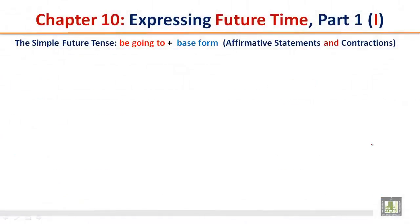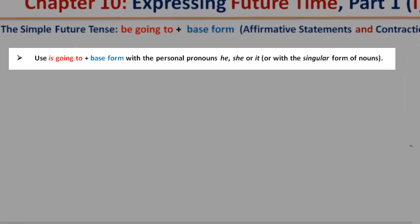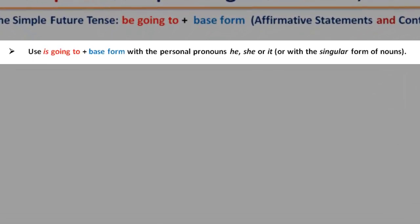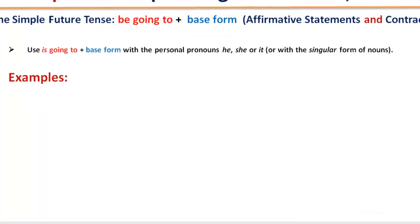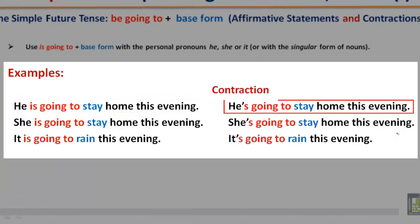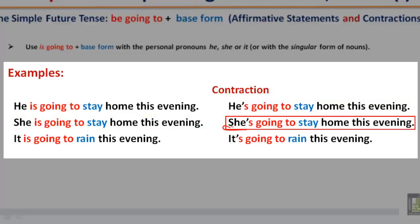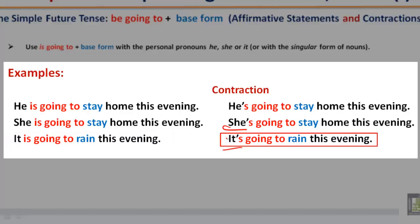The simple future tense: be going to plus the base form — affirmative statements and contractions. Use is going to plus the base form with the personal pronouns he, she, or it, or with the singular form of nouns. Examples: He is going to stay home this evening. Contraction: He's going to stay home this evening. She is going to stay home this evening. Contraction: She's going to stay home this evening. It is going to rain this evening. Contraction: It's going to rain this evening.